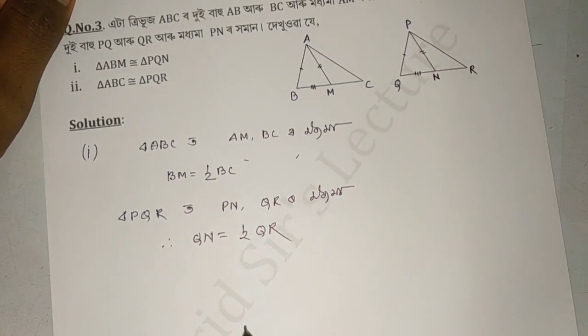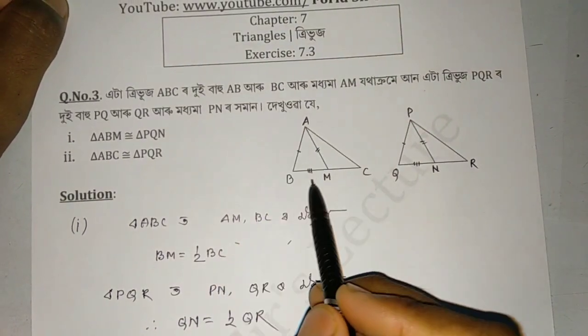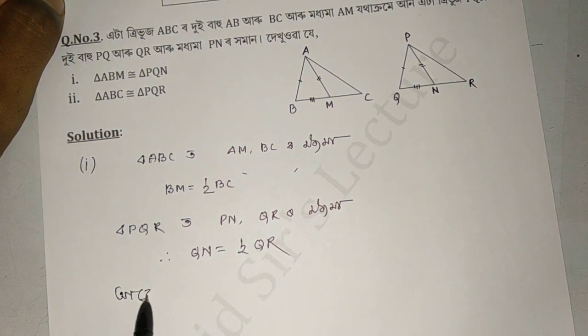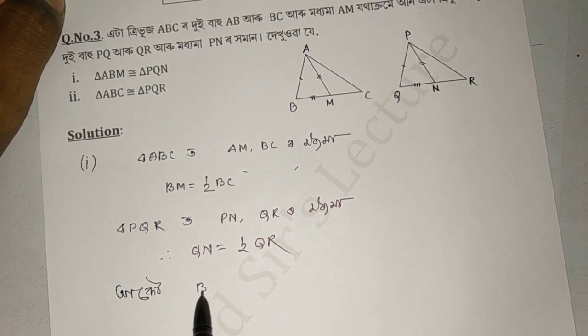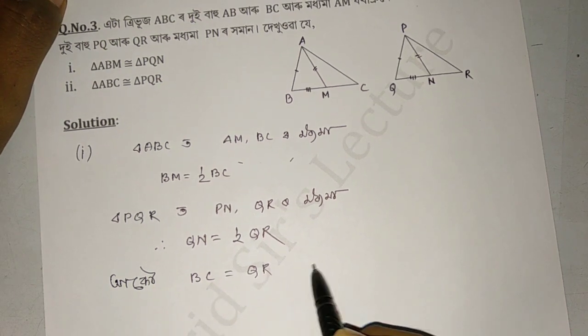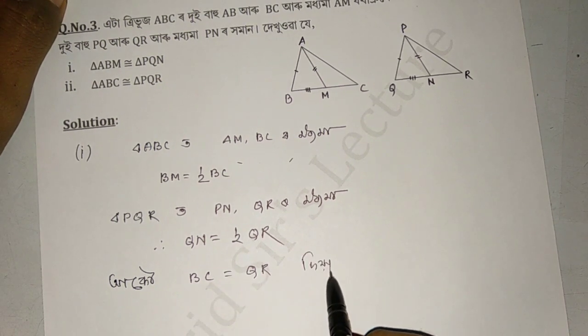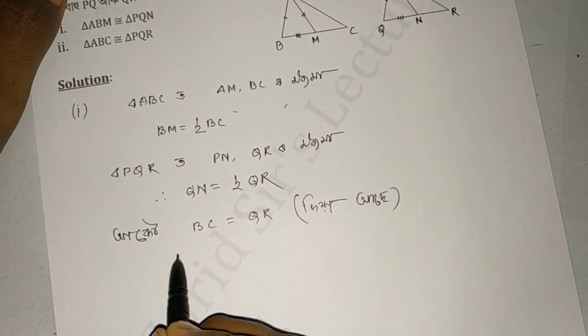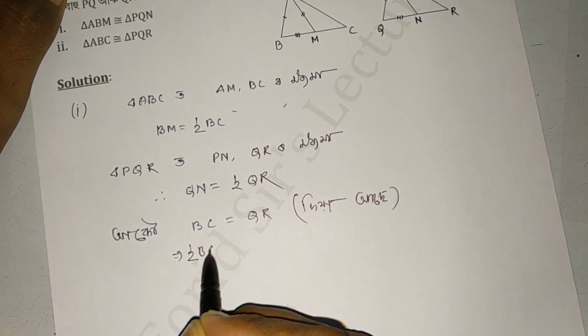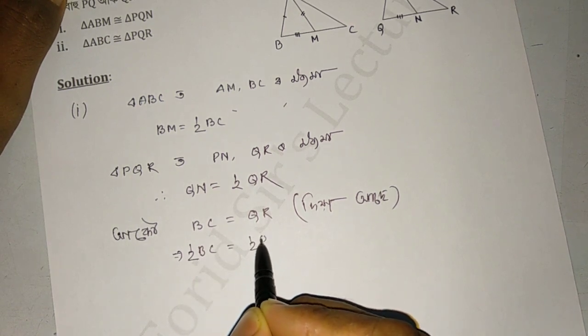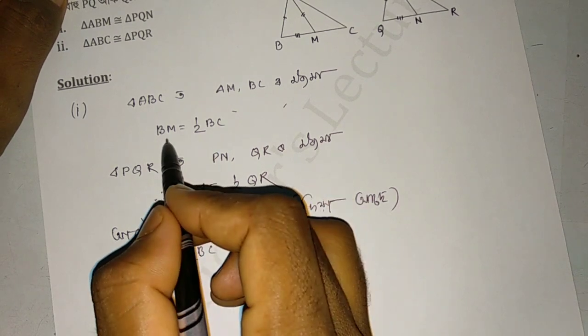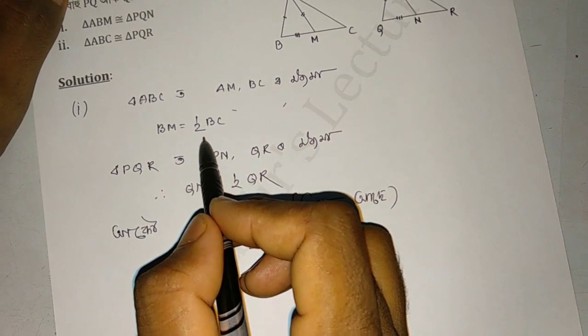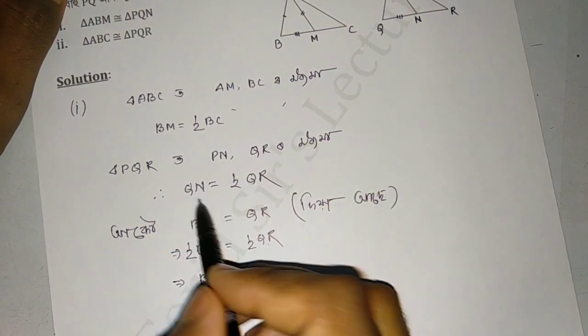Similarly, we have to multiply half of BC into half of QR. Since half of BC is BM, and we know GN is half of QR, we can establish that BM corresponds to half of QR.